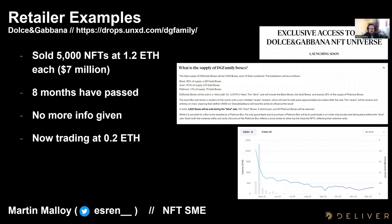Another example is Dolce & Gabbana. They raised almost $7 million selling what they called DG Family Boxes — kind of 3D glass NFT boxes. They had a big explanation saying this would be for events, future airdrops, and eight months have now passed with no information. That project is now trading at 0.2 compared to the 1.2 people paid, and that's certainly not going down well with holders.